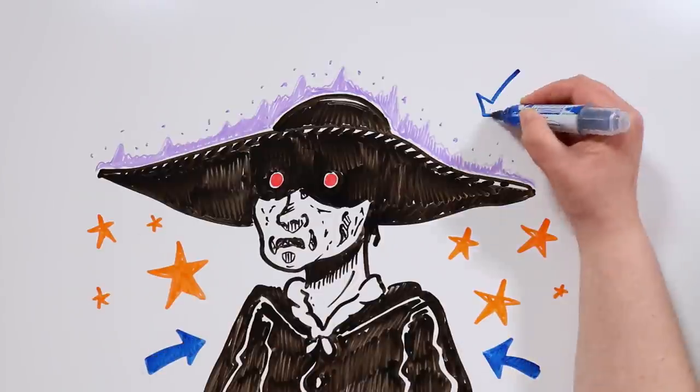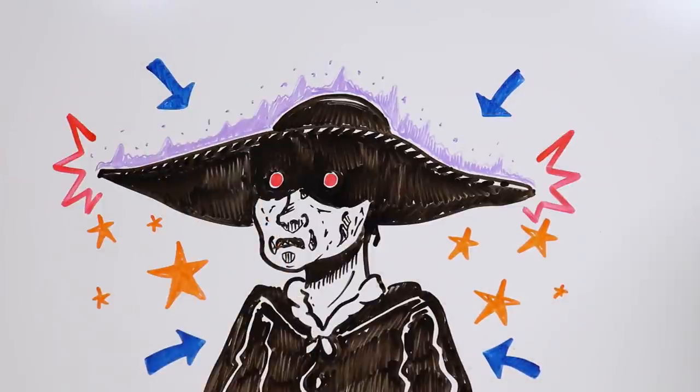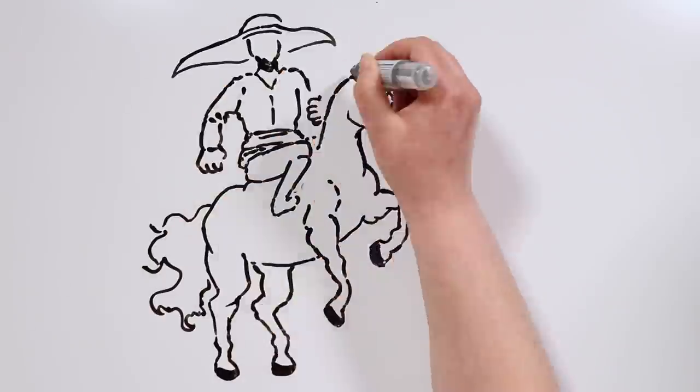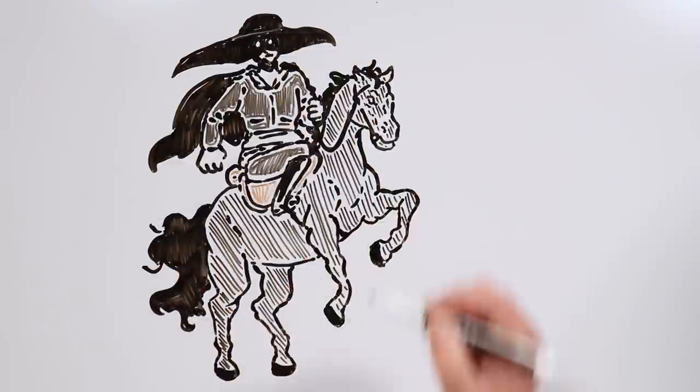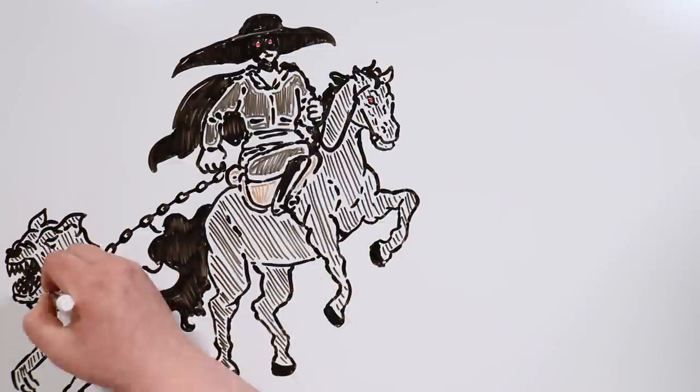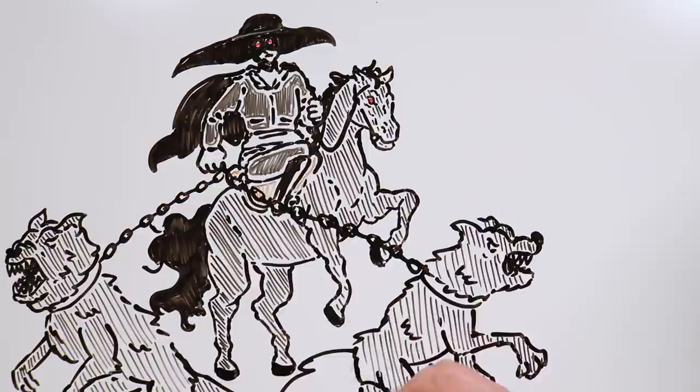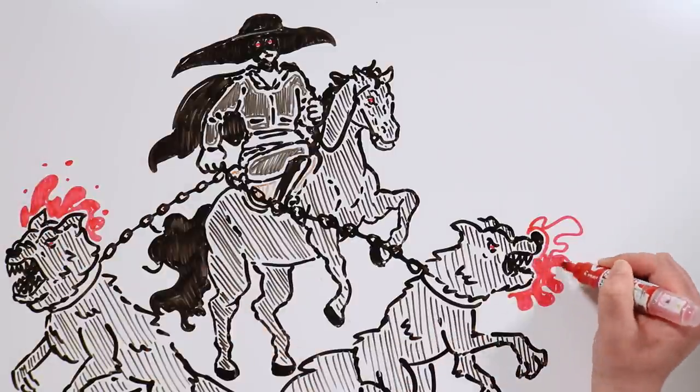Thus, people who have ever seen him from far have never seen his face. He is always riding his horse and always carries with him two fierce black dogs. He holds them with huge chains waiting to be released to devour whomever crosses their way.